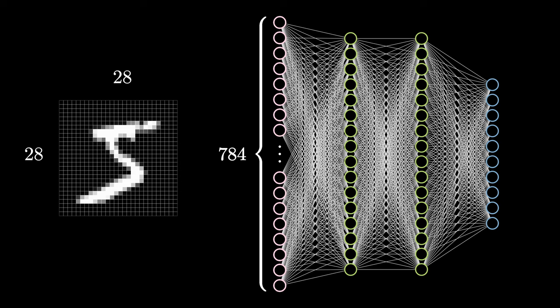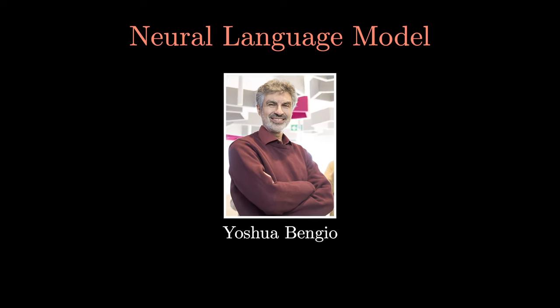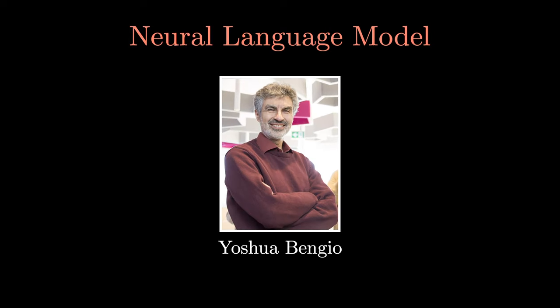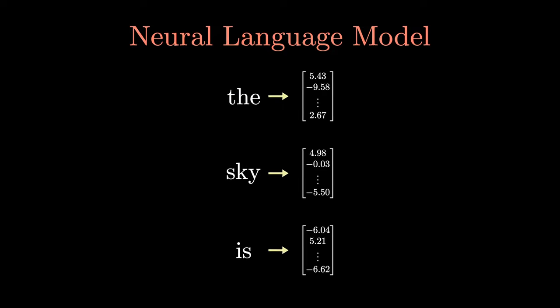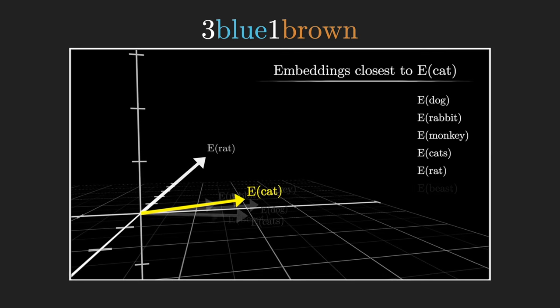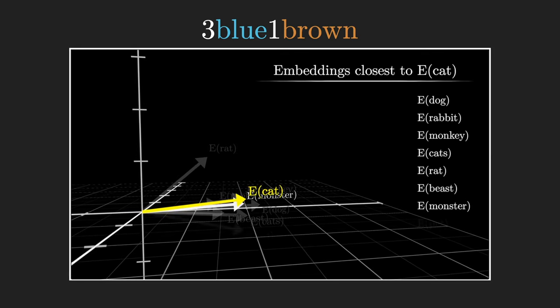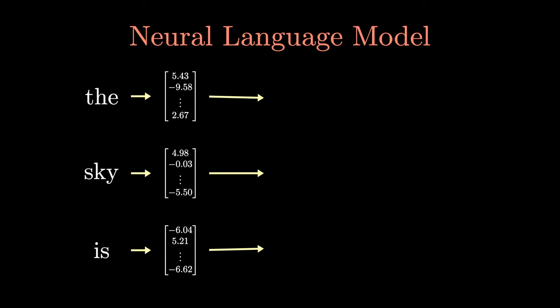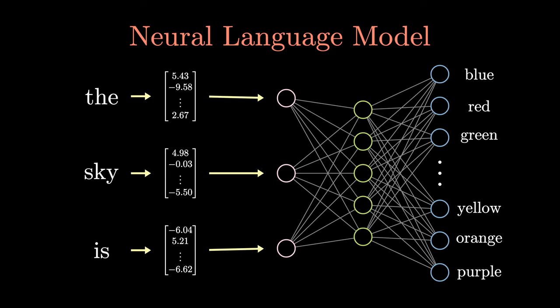One of the earliest language models came from a paper by Yoshua Bengio, one of the pioneers of deep learning. This method worked by first associating each word with a vector called a word embedding. These embeddings are meant to encode a numerical representation of what each word means. Then, if I'm learning a trigram model, I simply concatenate three of these embeddings together and pass them through a neural network. The output of this neural network has a neuron for each of the possible words, which gives us a probability distribution over the next word.